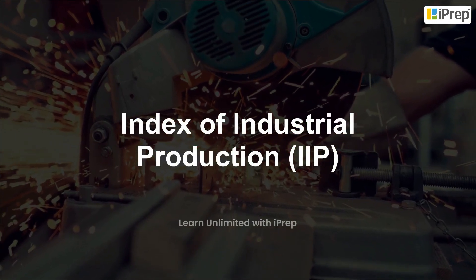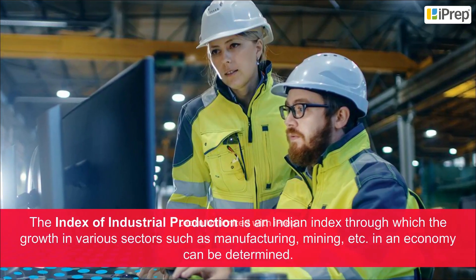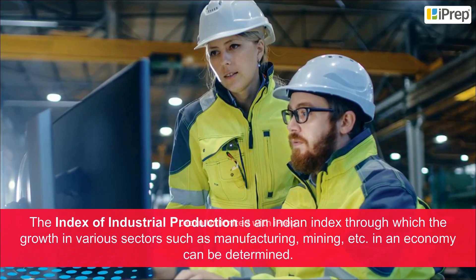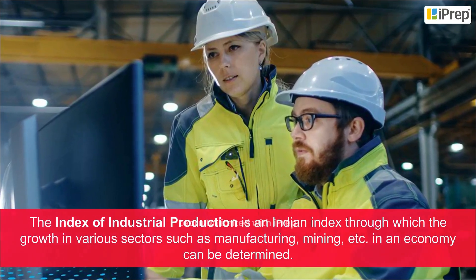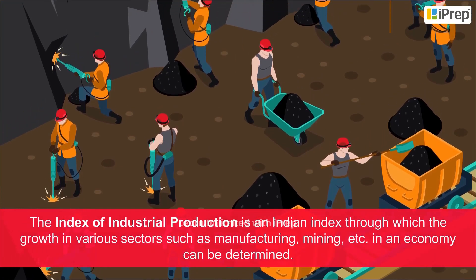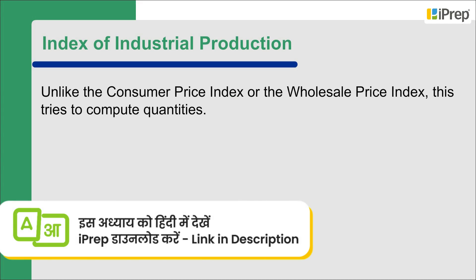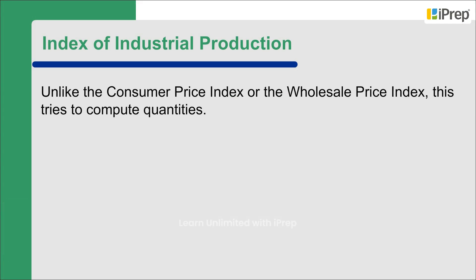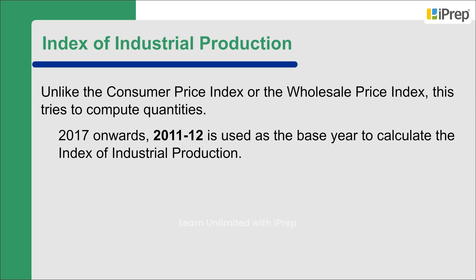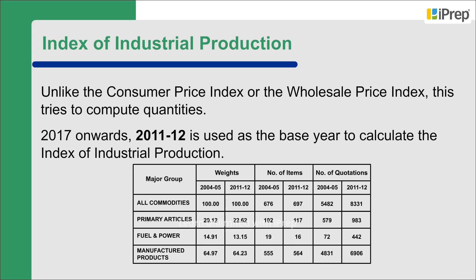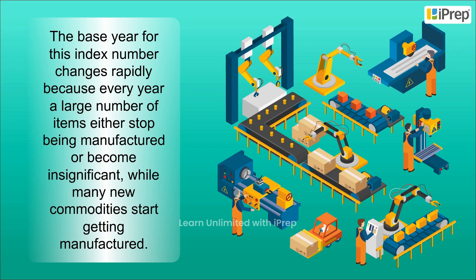The Index of Industrial Production (IIP) is an Indian index through which the growth in various sectors such as manufacturing, mining, etc. in an economy can be determined. Unlike the CPI or WPI, this index tries to compute quantities. From 2017 onwards, 2011-12 is used as the base year to calculate the IIP. The base year for this index changes rapidly because every year a large number of items either stop being manufactured or become insignificant.